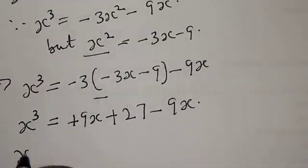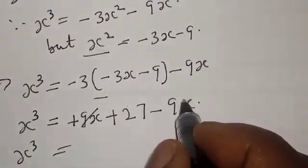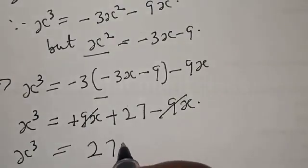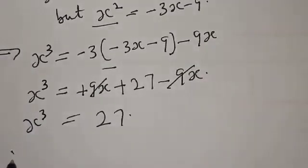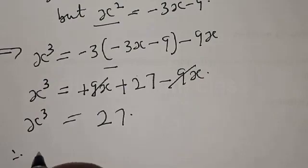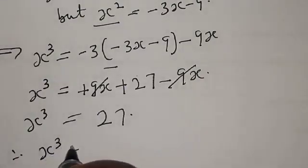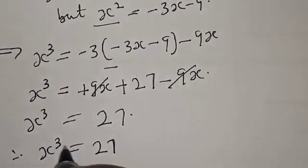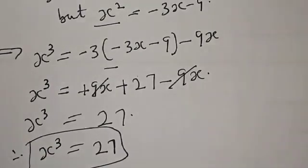Then s raised to power 3 will be equal to: the 9s and minus 9s cancel, leaving s raised to power 3 equal to 27. Therefore our final answer is s raised to power 3 equals 27.